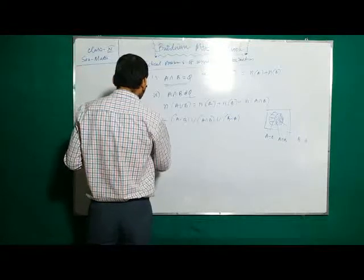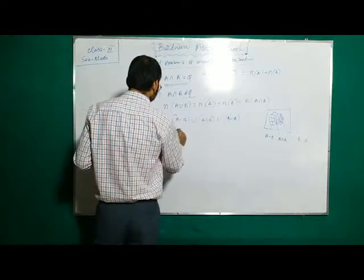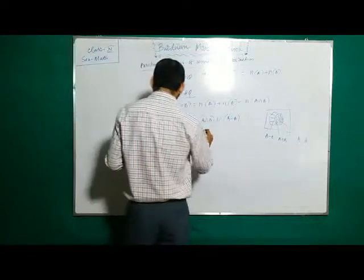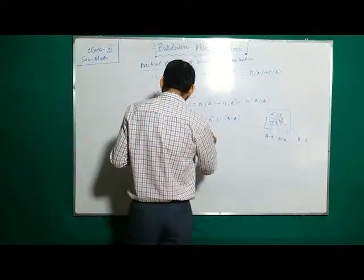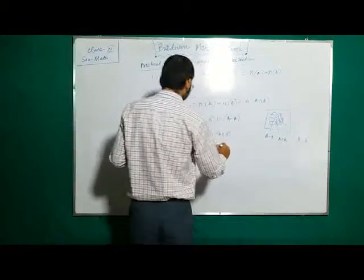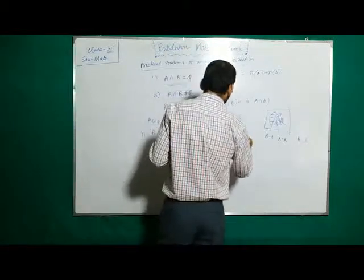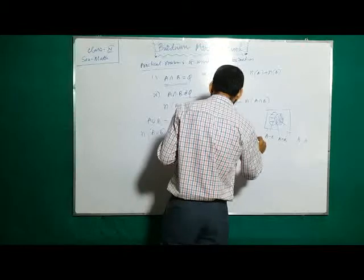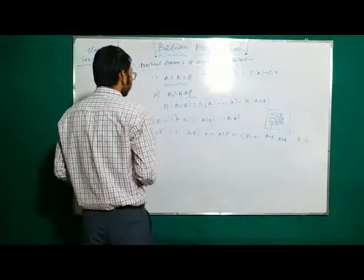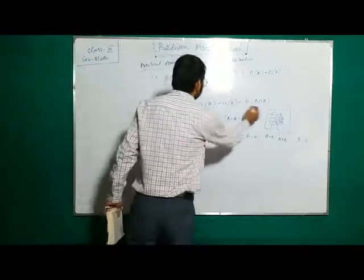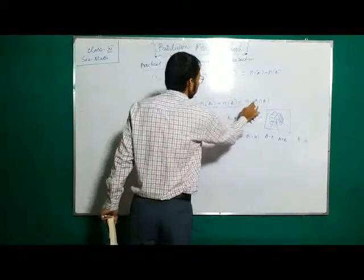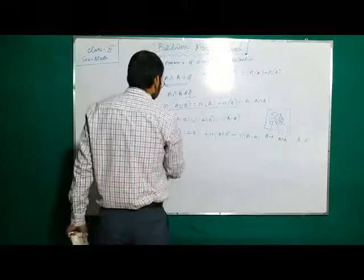So n of A union B equals the number of elements in A minus B, plus n of A intersection B, plus n of B minus A. We want to show that n of A union B equals n of A plus n of B minus n of A intersection B.